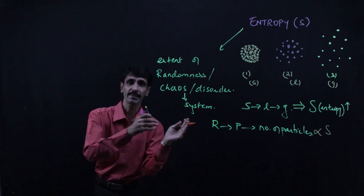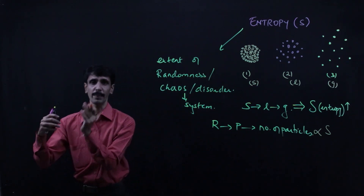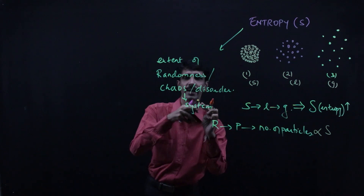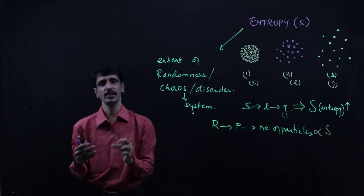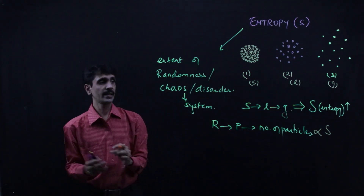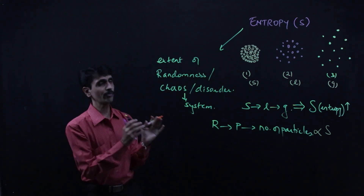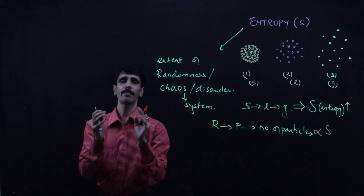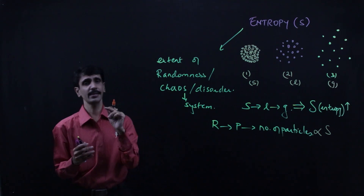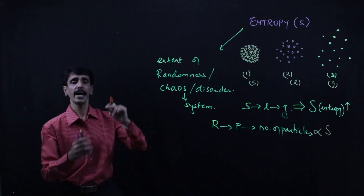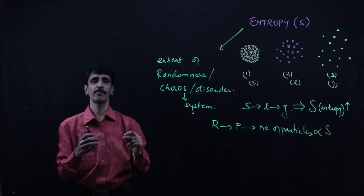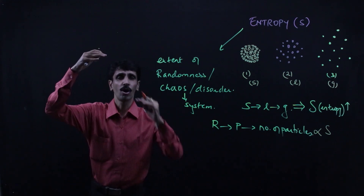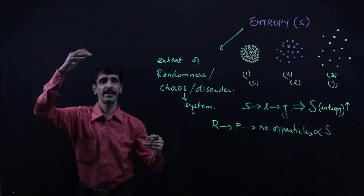If the number of particles increases, entropy will increase. If we go from gas to liquid to solid, entropy will decrease. These are the two factors — physical state as well as number of particles — which are related to entropy, and on the basis of which entropy may increase or decrease.